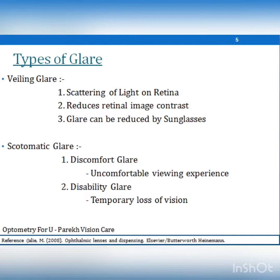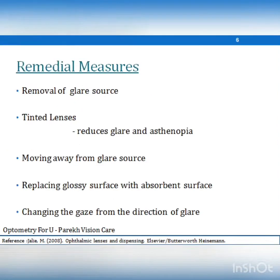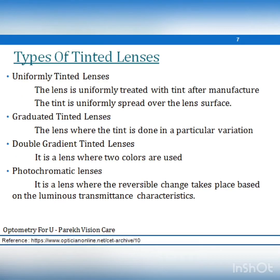Scotomatic glare arises when an intense source of light is present in the field of view, where photoreceptor molecules are bleached causing discomfort and disability glare. In discomfort glare you are able to see the source with discomfort, while in disability glare you won't be able to view the source of light at all. Relief from glare can be achieved by removing the glare source, using tinted lenses that reduce glare and asthenopia, replacing glossy surfaces with absorbent surfaces, or changing the direction of the glare.